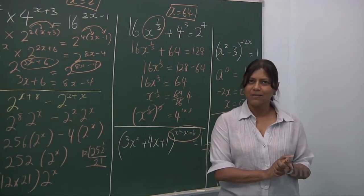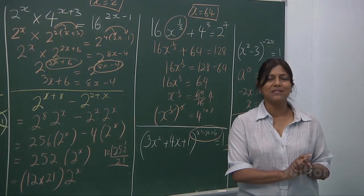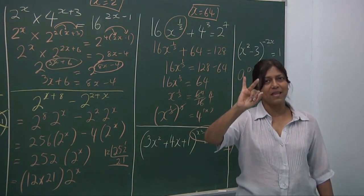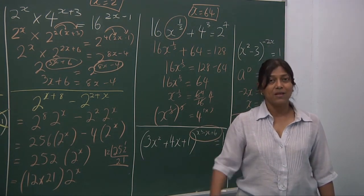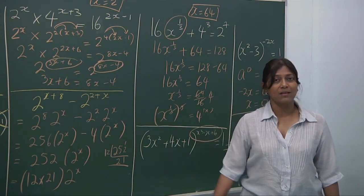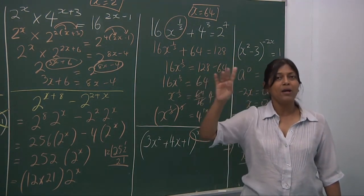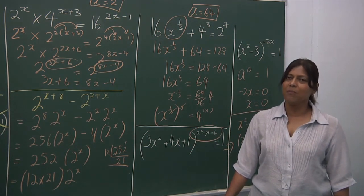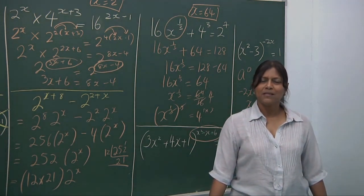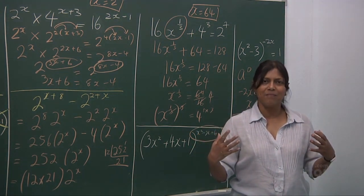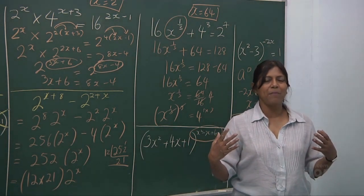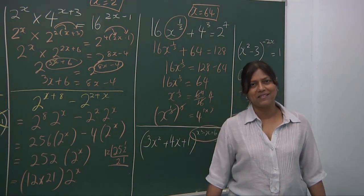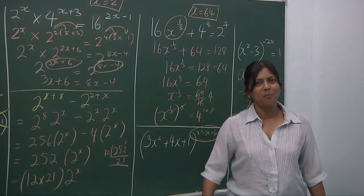Indices is not difficult. All we need to know is the laws of indices at our fingertips — the 8 powerful laws. A to the power of 0 is 1. a^m times a^n — add up the powers. When you divide, that's the 3rd law — take away the powers. The 4th law — power of a power — multiply the powers. When you have a to the power of minus n, make it positive. The rest of the 4 laws, I'm sure you know. Apply them and any difficult sum becomes manageable. I'd like to say you'll be a master of indices — just follow through, go back, rewind, find out more. Thank you.